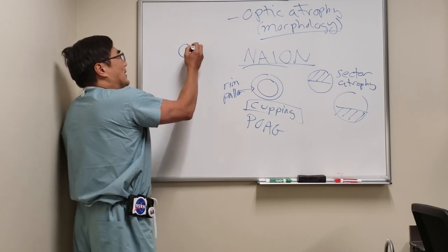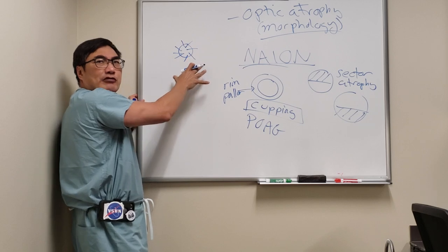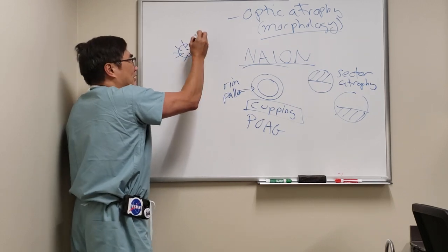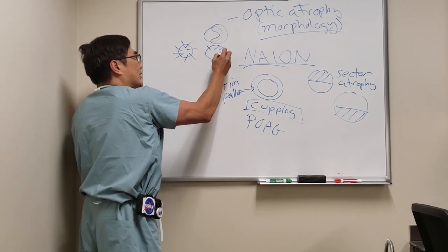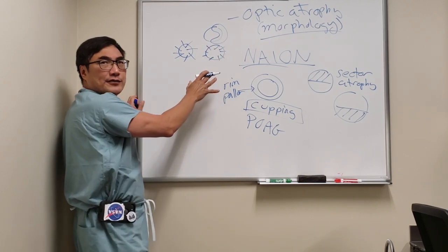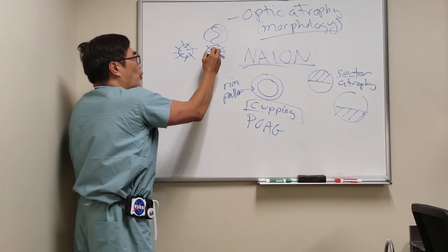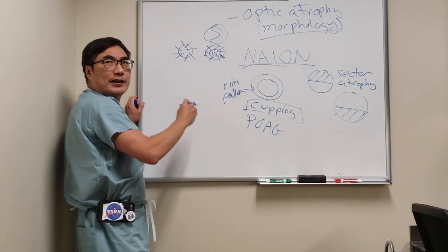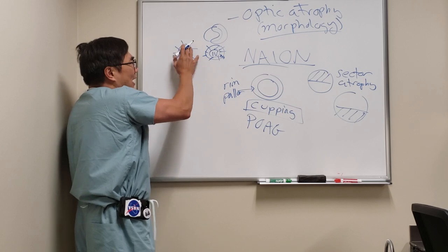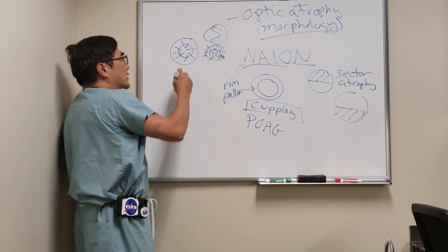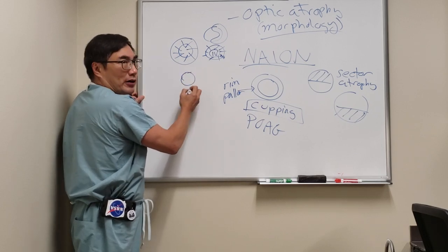Then you have post-papilledema optic atrophy. Papilledema has Frisén grades: grade one, where you just have a C-shaped halo of nasal elevation; grade two, where it's 360 degrees but without obscuration of the blood vessels; grade three, where there is obscuration of the blood vessels as they cross the margin; grade four, where the obscuration is central; and grade five, where you can't see anything. In patients who have papilledema, their atrophy might be distinguished from post-NAION atrophy by the presence of what we call a high watermark.